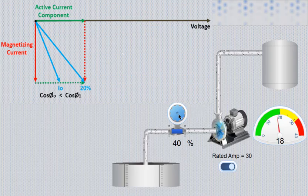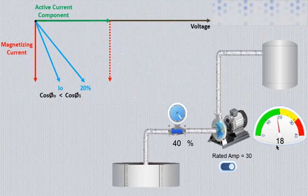At 40 percent of load, active component again increased, while magnetizing component will remain same as it was on no load. At this resultant current, power factor is further improved.